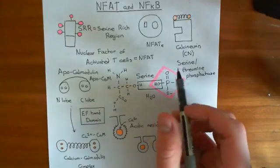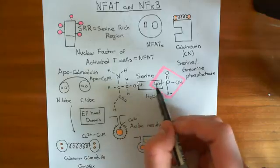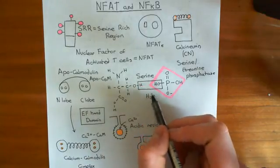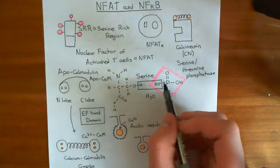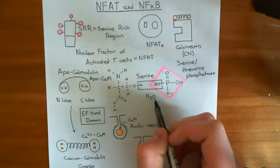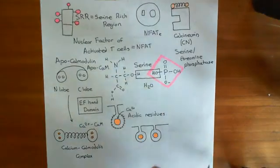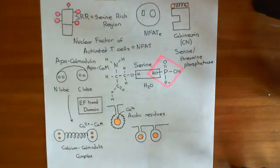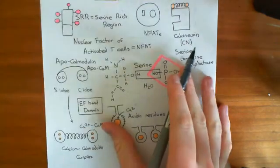That's a hydrolysis reaction. When you forged the link between the phosphate group and the serine residue, you took water out — that was a condensation reaction. Now, when you cleave the bond between the serine residue and the phosphate group, you put water back in, and therefore it's a hydrolysis reaction. Hydro for water, lysis for splitting apart. Calcineurin is capable of catalyzing this hydrolysis reaction.